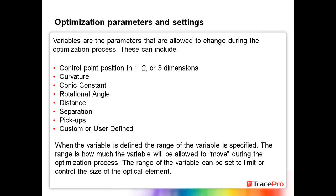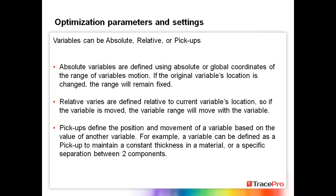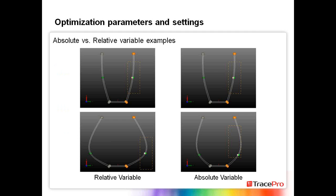When the variable is defined, the range of the variable is specified — how much that variable is allowed to move during the process. The range could also be used to set or limit the size of the element itself. If you're designing a reflector and want a fixed 50mm width, you could set your variable so the reflector never gets larger than 50mm in diameter. Variables can be absolute, relative, or pickups. Absolute variables use global coordinates for the range; if the variable's location is changed the range stays fixed. Relative variables move with the variable. Pickups define position and movement based on another variable's value.